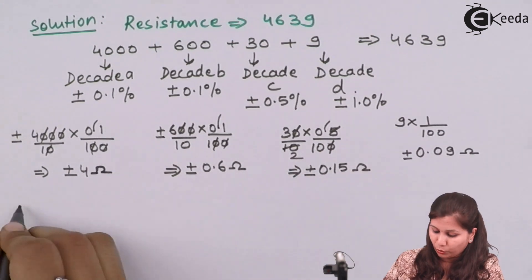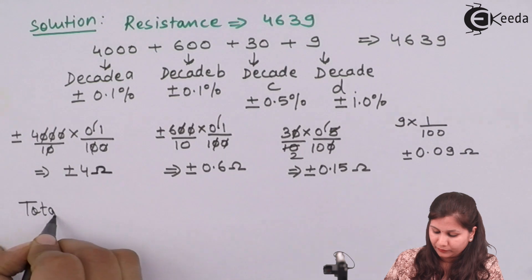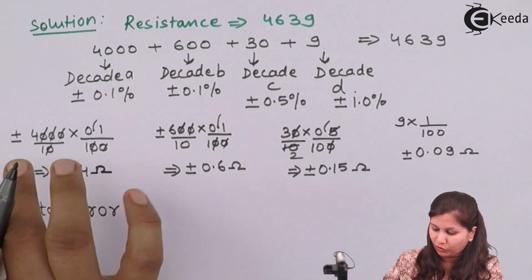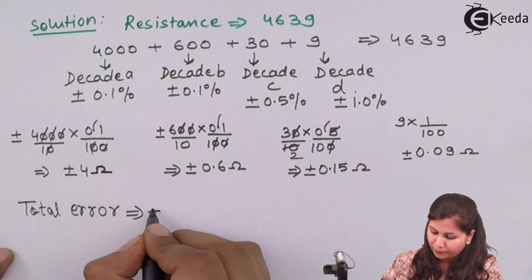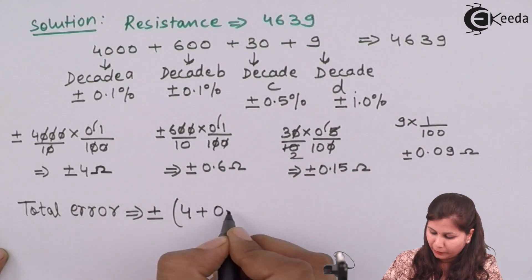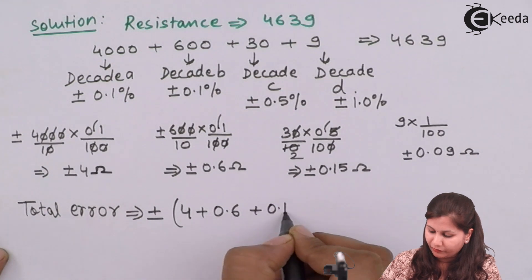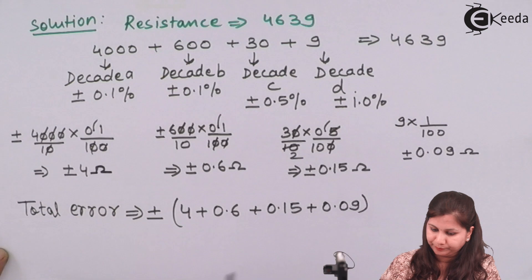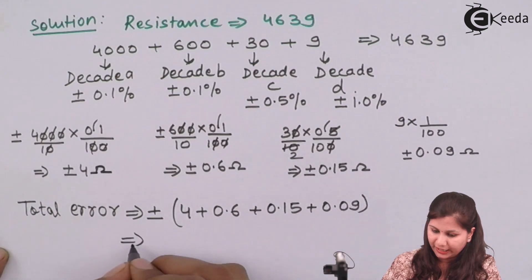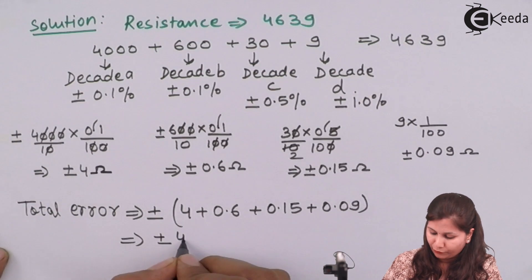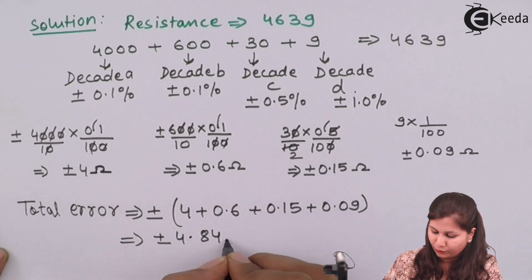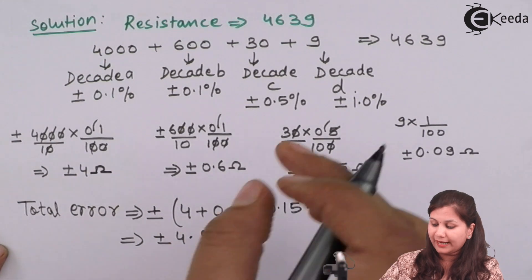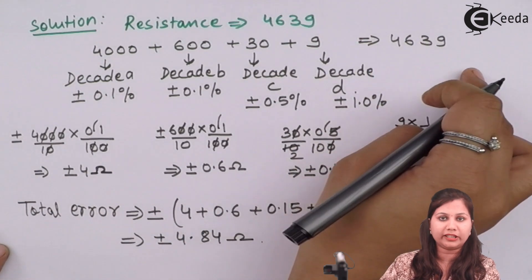The total error is the sum of all individual errors: ±(4 + 0.6 + 0.15 + 0.09) = ±4.84 ohms. This is the total error occurring at the reading of 4639 ohms.